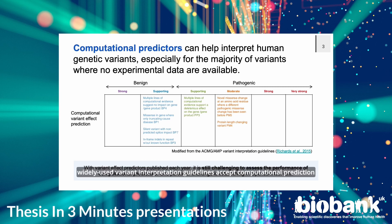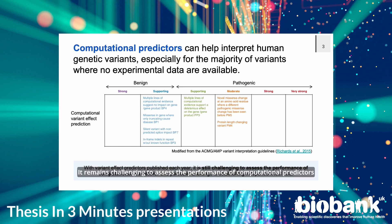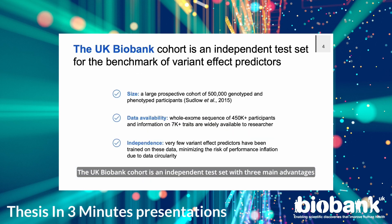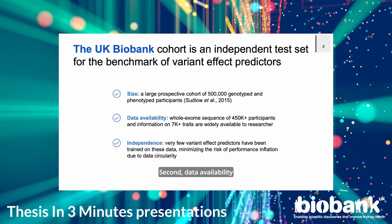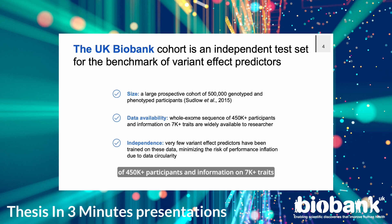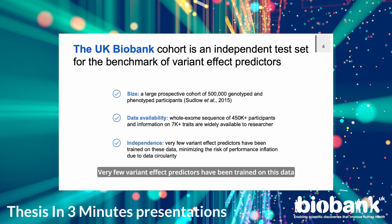Computational predictors can help interpret the likelihood of pathogenicity of human genetic variants, especially for the majority of variants where no experimental data are available. Widely used variant interpretation guidelines accept computational prediction as a source of functional evidence. It remains challenging to assess the performance of computational predictors, and one particular challenge is establishing independent test datasets. The UK Biobank cohort is an independent test set with three main advantages: size — UK Biobank contains 500,000 genotyped and phenotyped participants; data availability — researchers can access whole exome sequences of 450,000 participants and information on 7,000 traits; and independence — very few variant effect predictors have been trained on this data, minimizing the risk of performance inflation due to data circularity.